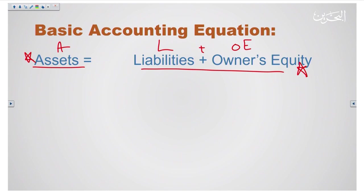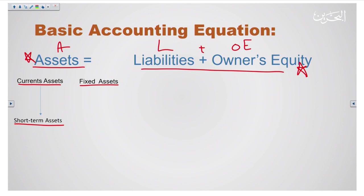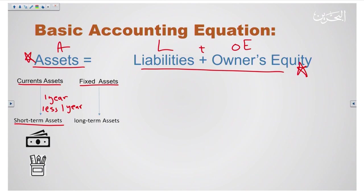In this lesson we are going to learn that assets are classified into current assets and fixed assets. Current assets are short-term assets used in the business for one year or less, like cash or supplies. Fixed assets are long-term assets which stay in the business for more than one year, like buildings or motor vehicles.